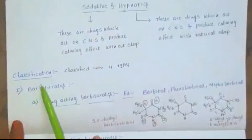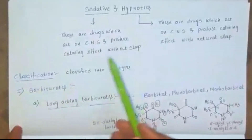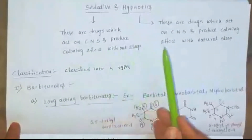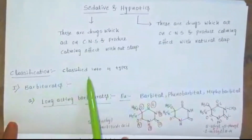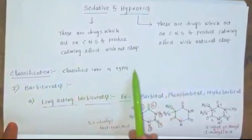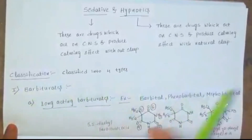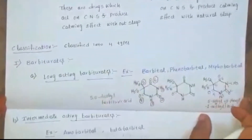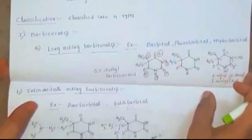Coming to classification, sedatives and hypnotics are classified into four types. The first one is barbiturates.